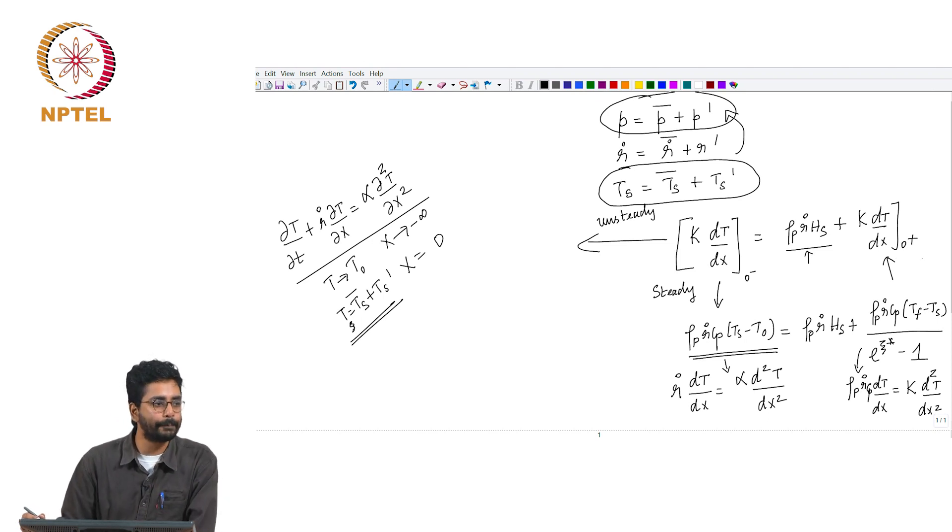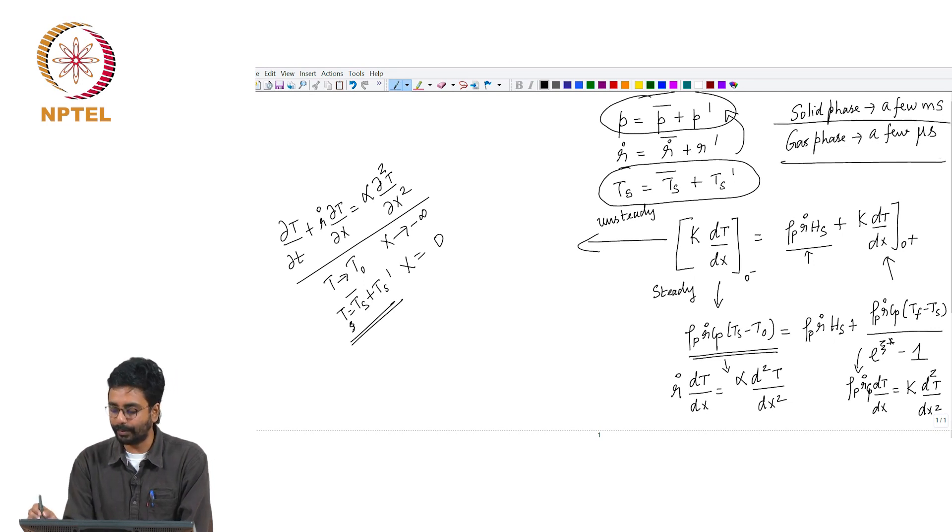Remember that the response time for the solid phase is a time scale of a few milliseconds. On the other hand, gas phase response is much, much faster, probably a few or a few tens of microseconds. And therefore, remember that we are interested in pressure fluctuations with a frequency of about a few hundred hertz, and therefore a time scale of a few milliseconds.